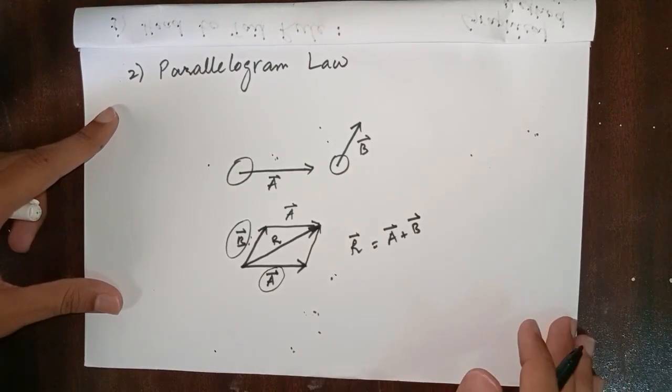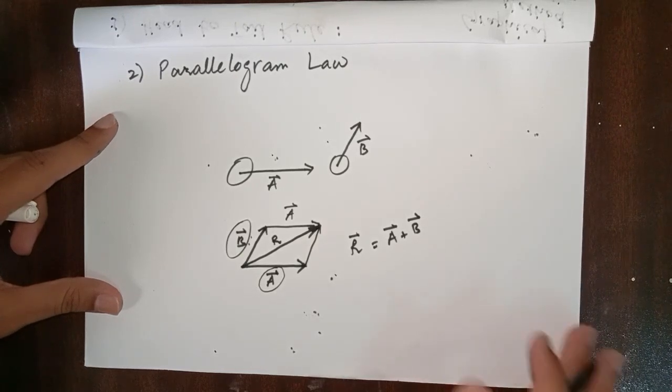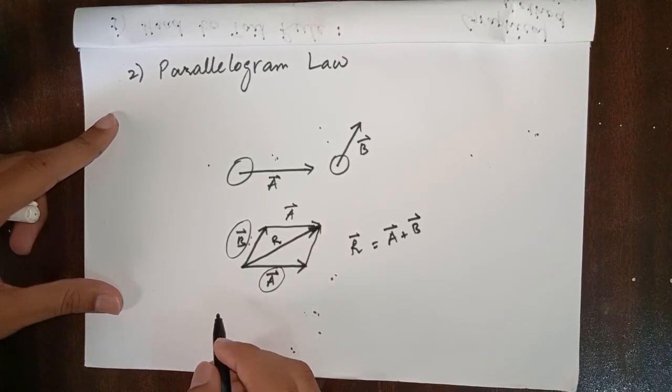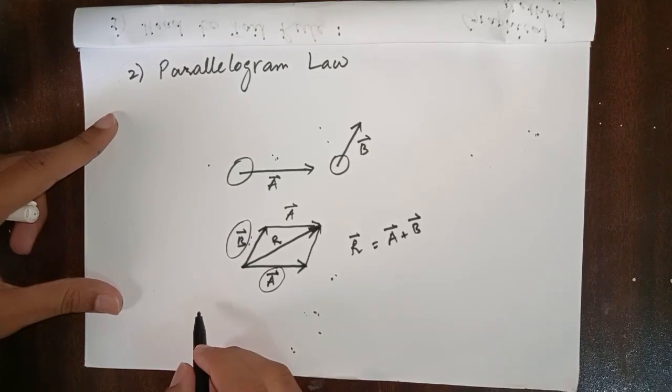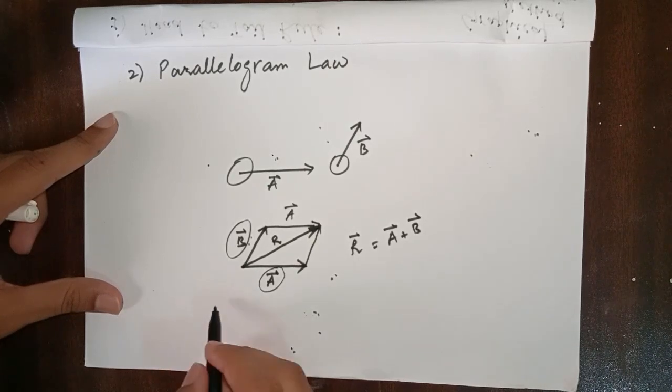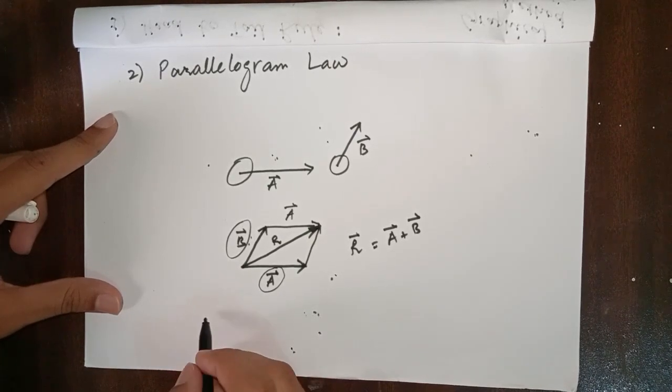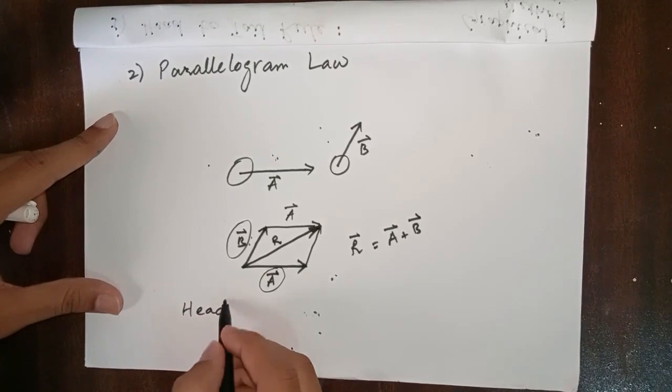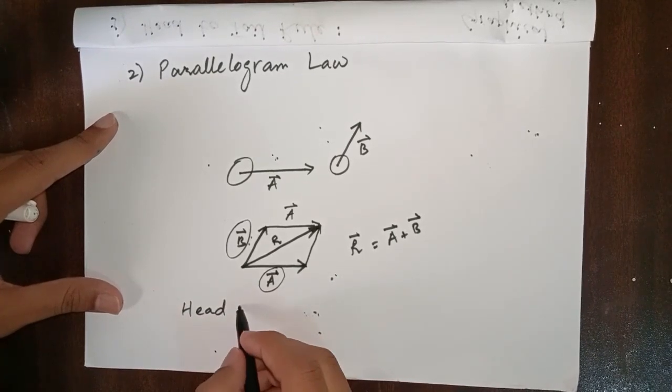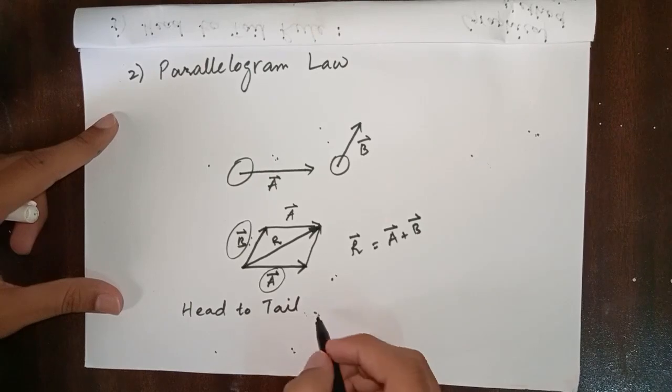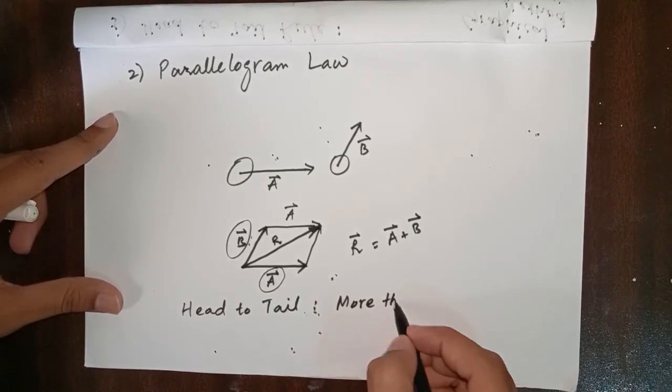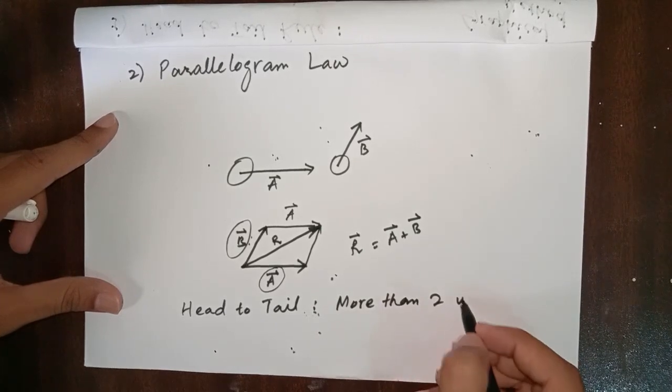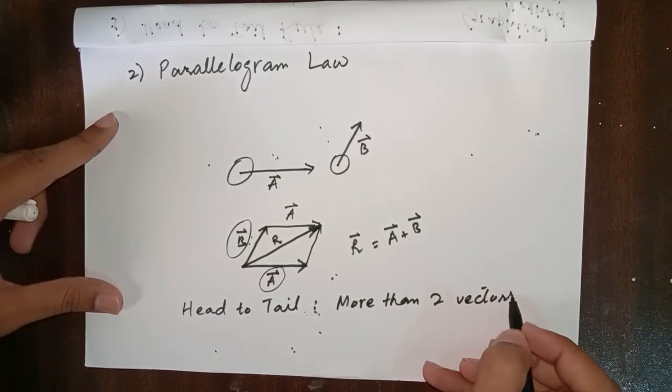So far we have studied these two laws, but there is a difference between these two laws according to their application. Head to tail rule can be used to add more than two vectors at a time.